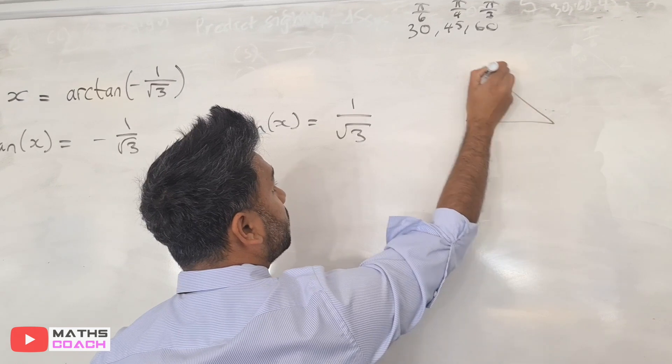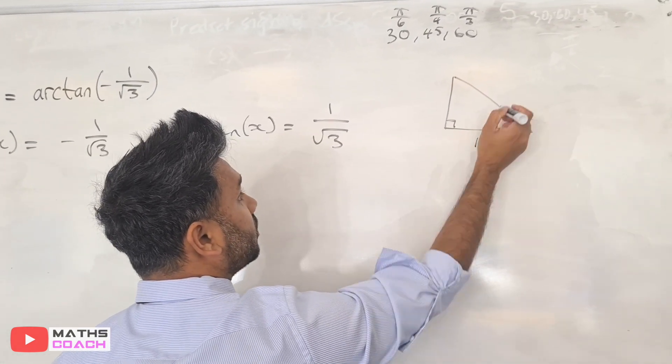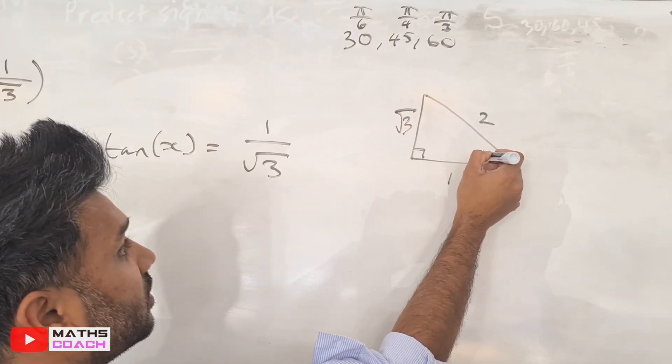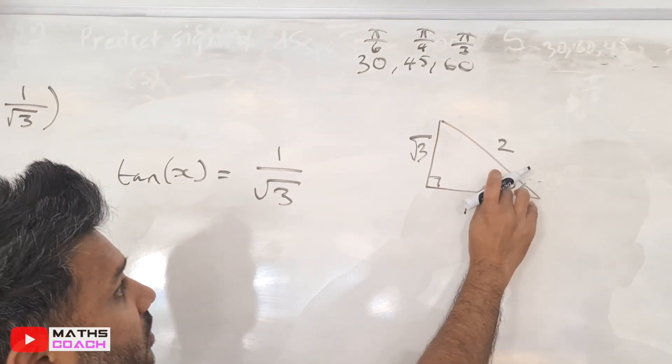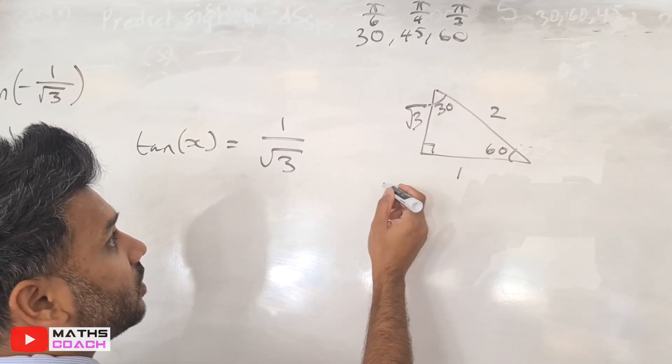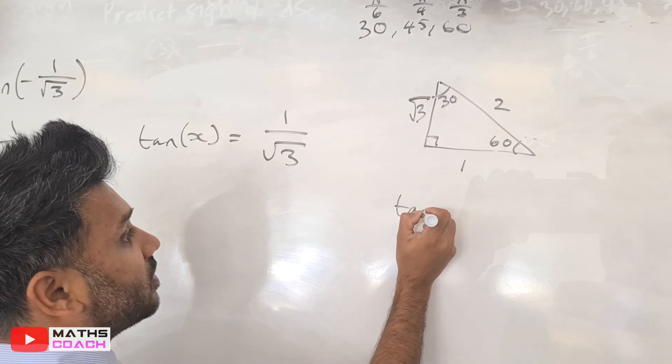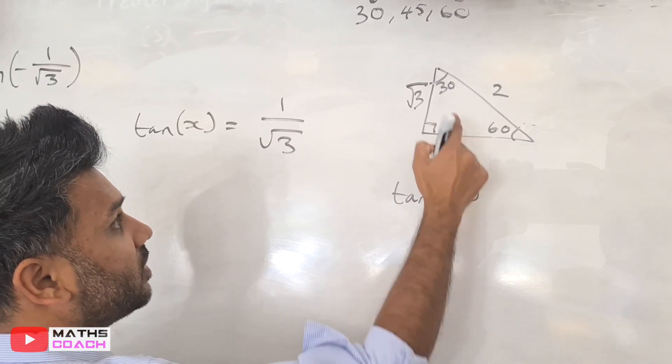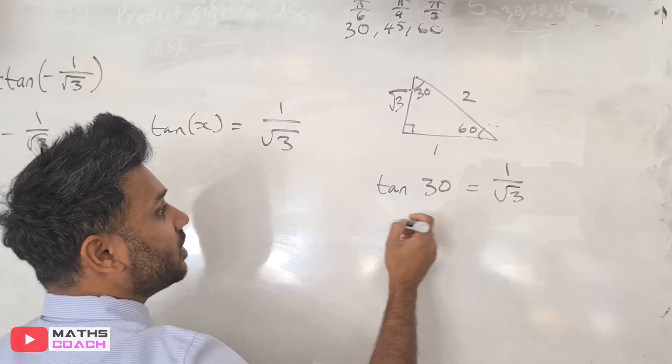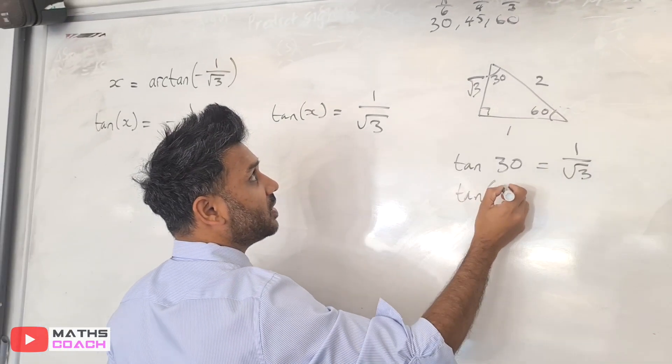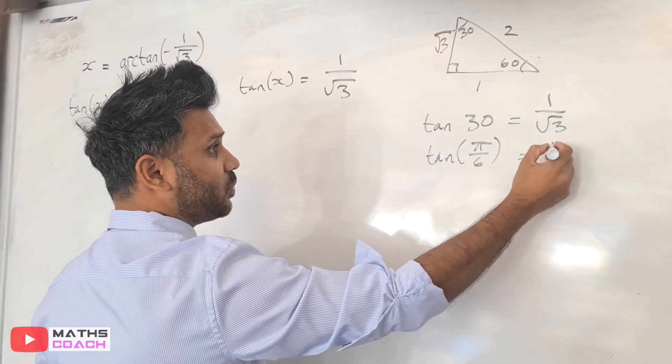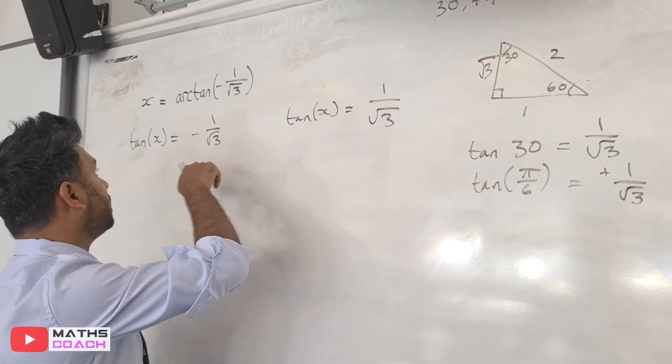So the triangle has a root three, the one, two, and you get the root three here, and that's 30 degrees here, so that's 60 degrees here and 30 degrees. Now, so tan of 30 is opposite divided by adjacent, so that gives you your 1/√3, or in radians this would be π/6. So we know that tan(π/6) gives you a positive 1/√3, and obviously here in our question it needs to be a negative one.